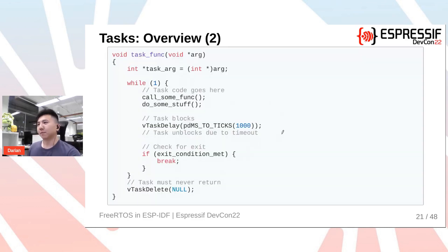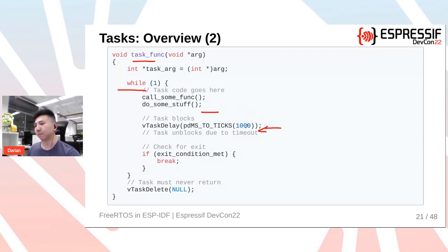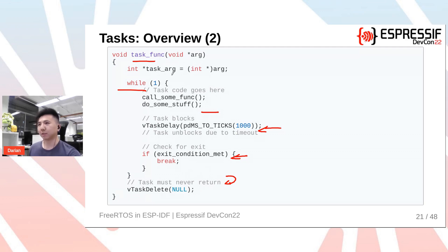Here's an example of a FreeRTOS task. Tasks are implemented inside functions that contain an infinite loop. Inside the loop, the task does some work and may block — for example, delaying for a period of time — entering the blocked state. It might also check for an exit condition; if ready to exit, it jumps out of the loop and deletes itself. One important note: task functions should never return. The task deletes itself rather than returning from the function.